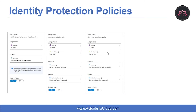So what is Azure AD Identity Protection? Identity Protection is a tool that allows organizations to accomplish three key tasks. First is to automate the detection and remediation of identity-based risk. Then it investigates risk using data in the portal. And the third task is exporting the risk detection data to third-party utilities for further analysis.